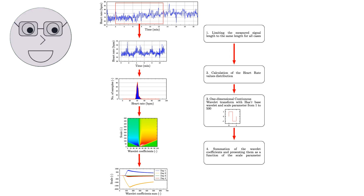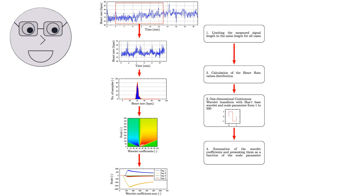Wavelets are different from traditional Fourier analysis, which decomposes a signal into a series of sine and cosine waves. Wavelets, on the other hand, decompose the signal into a set of basis functions that are localized in both time and frequency.